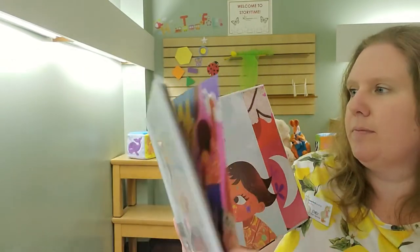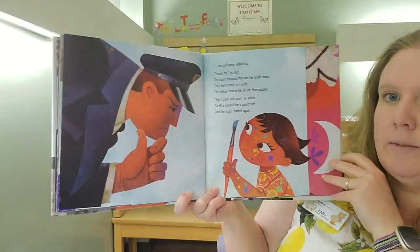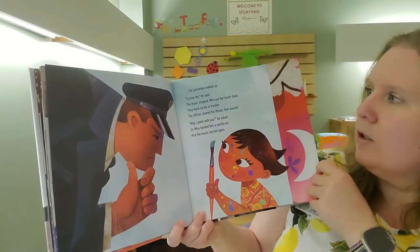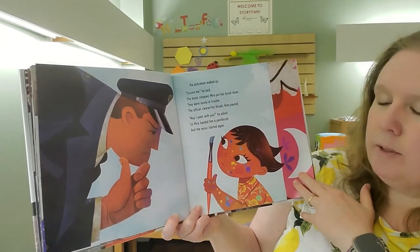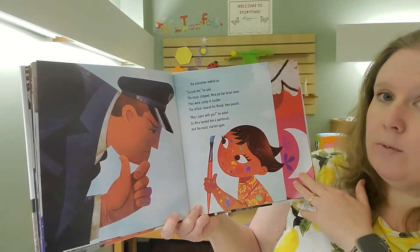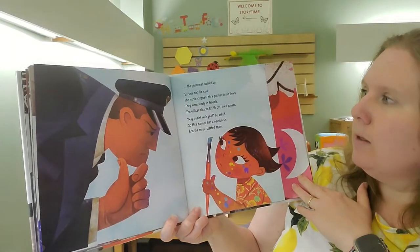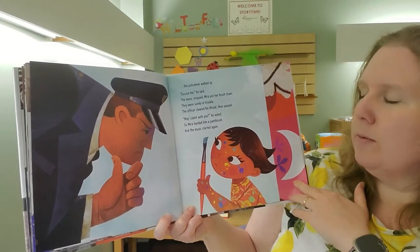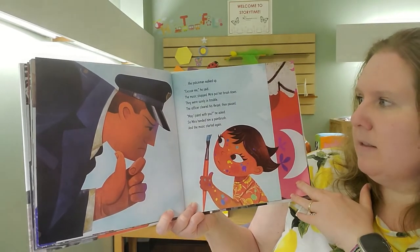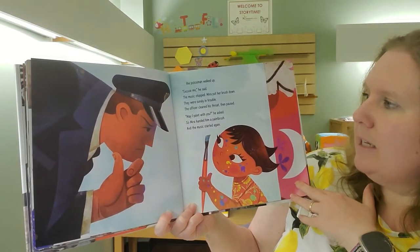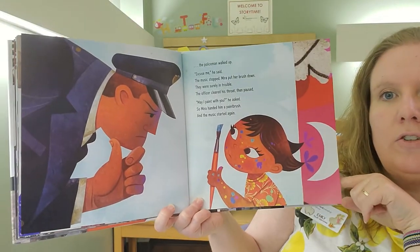Until the policeman walked up. Excuse me, he said. The music stopped. Mira put her brush down. They were surely in trouble. The officer cleared his throat, then paused. May I paint with you? He asked. So Mira handed him a paintbrush. And the music started again.